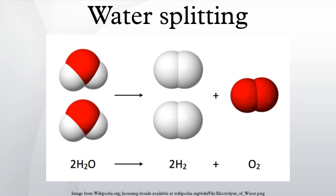Biological hydrogen can be produced in an algae reactor. In the late 1990s it was discovered that if algae are deprived of sulfur, they will switch from the production of oxygen — i.e. normal photosynthesis — to the production of hydrogen. It seems that production is now economically feasible by surpassing the 7.10% energy efficiency barrier.